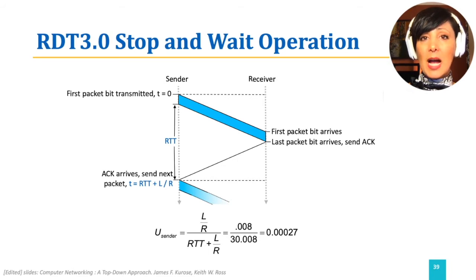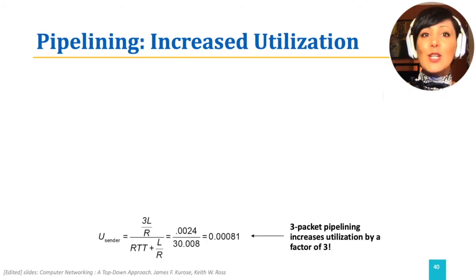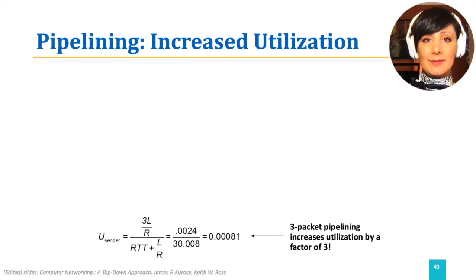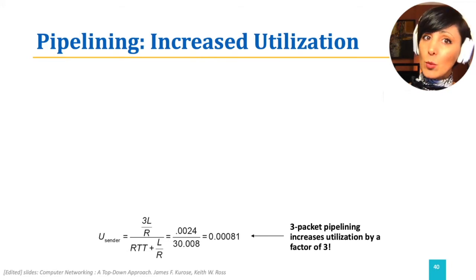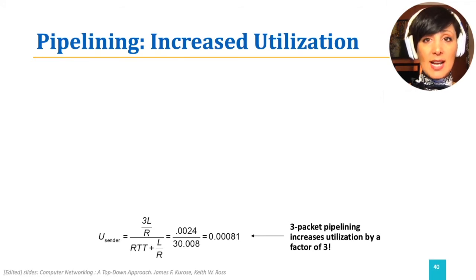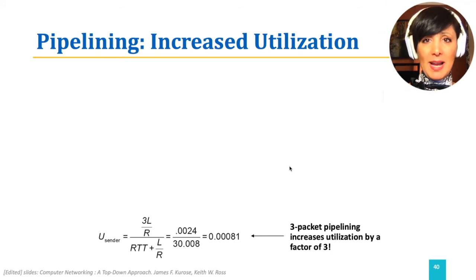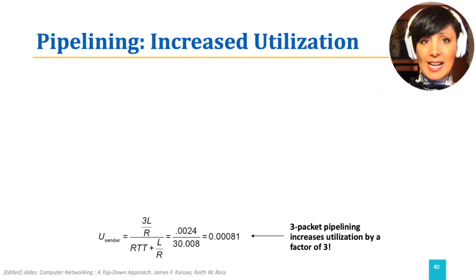How can we change that? To improve utilization, we can pipeline. Instead of sending one packet and waiting for it to be received on the other side, we can send a bunch of packets, having some of them in flight while we are waiting for the ACKs of those sent.